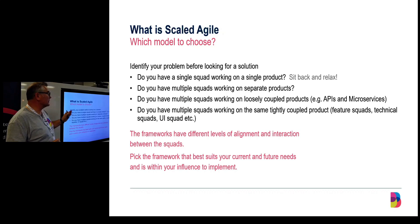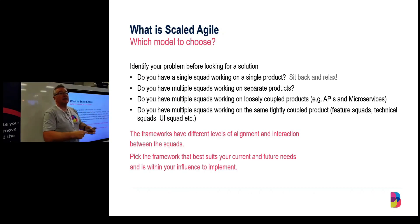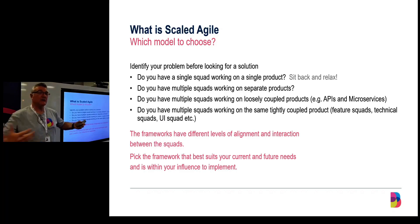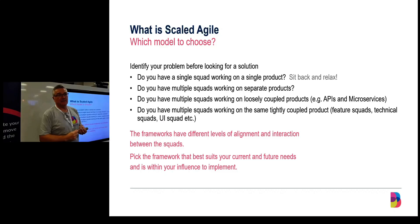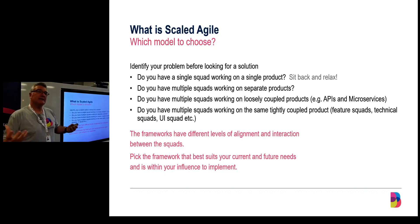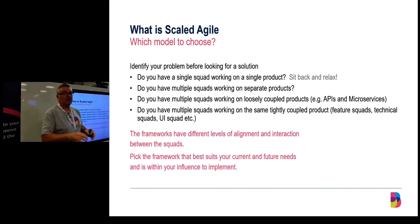If you've got multiple squads working on separate products — for instance, a consultancy where you've got one squad working on one client site and another on a different one — it's a lot easier to manage. They don't need to work tightly together. Yes, you still want some governance to see what all the projects are doing, and there are advantages to implementing agile, but you wouldn't need a complex model like SAFe.